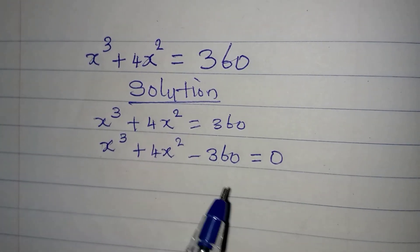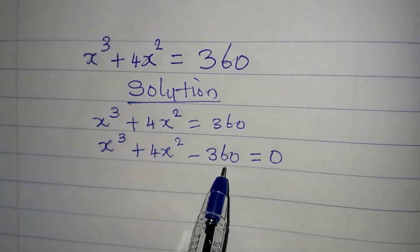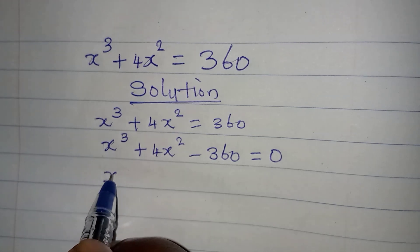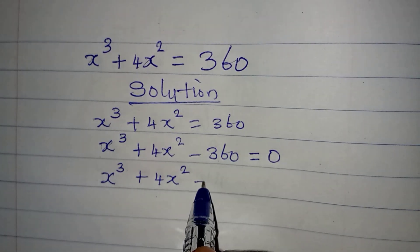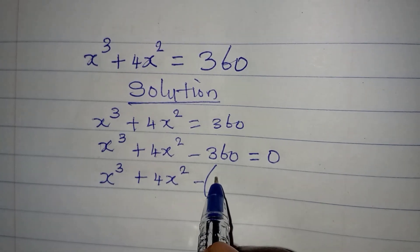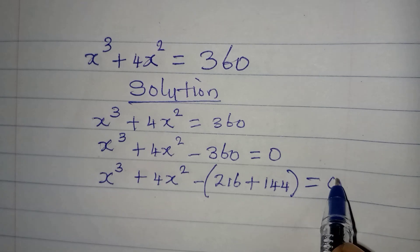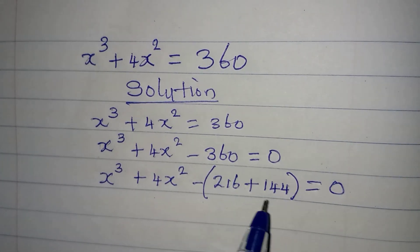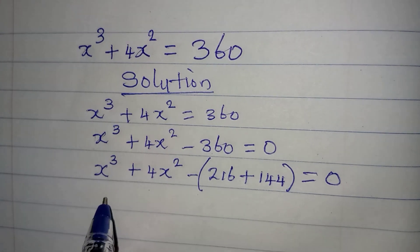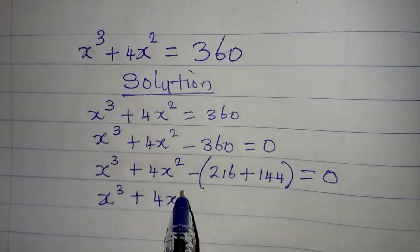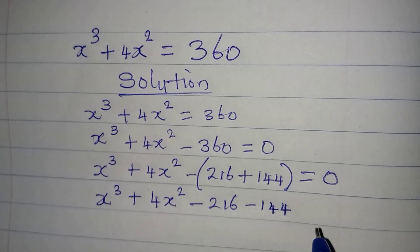It will be very difficult for us to factorize this without breaking down any of the terms. So I want to break down the 360. We get x to the power of 3 plus 4x squared minus, open bracket, 360 is the same thing as 216 plus 144, and this equals zero. I brought out 216 and 144 because I can write both of them in index form.